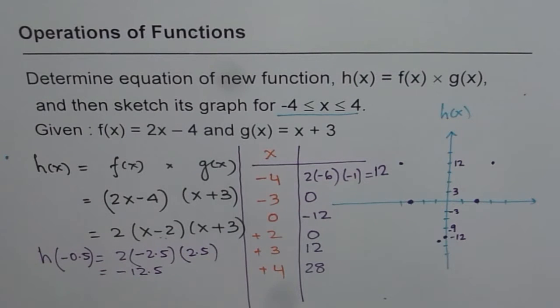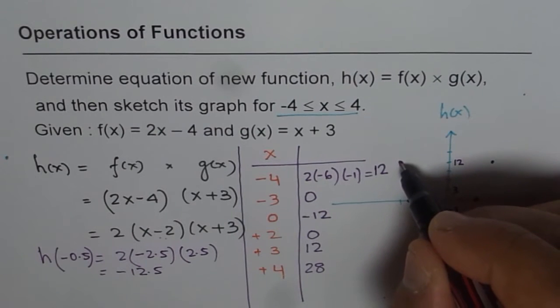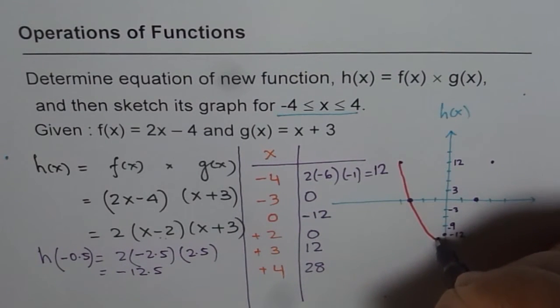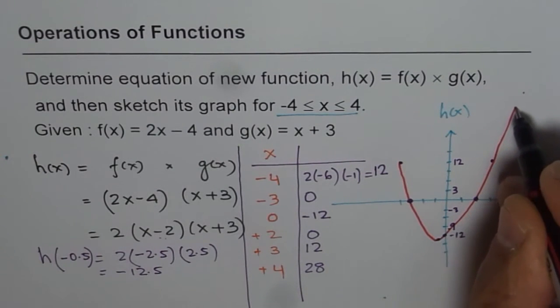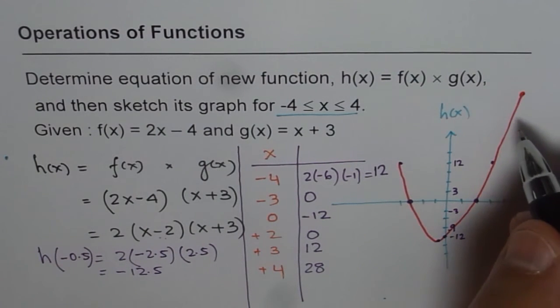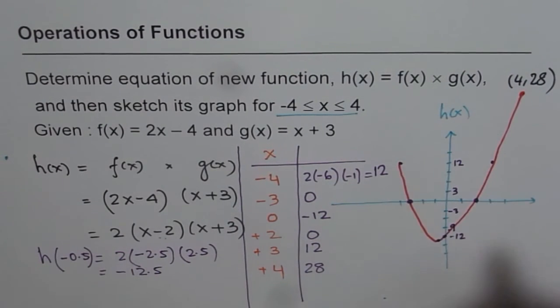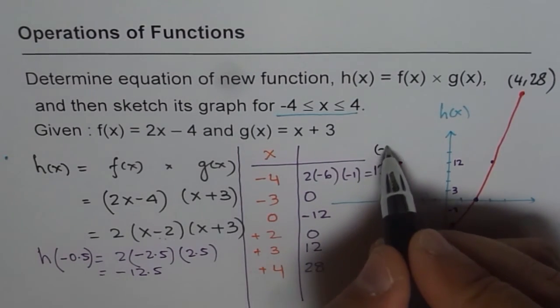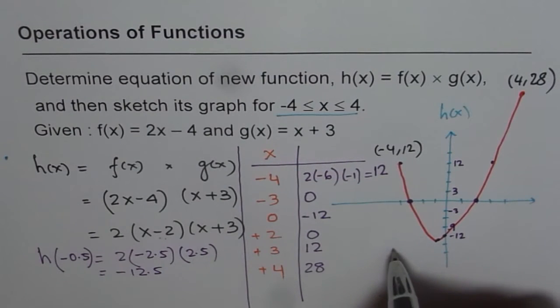Well, these points are enough to sketch the graph. So we can sketch from minus 4 to plus 4. So that is the minus 4 extreme with the minimum at minus half. And then we can extend it to this point which we'll just label. We'll say this point for us is (4, 28) and this point for us is (minus 4, 12). And that minimum for us is (minus half, minus 12.5).